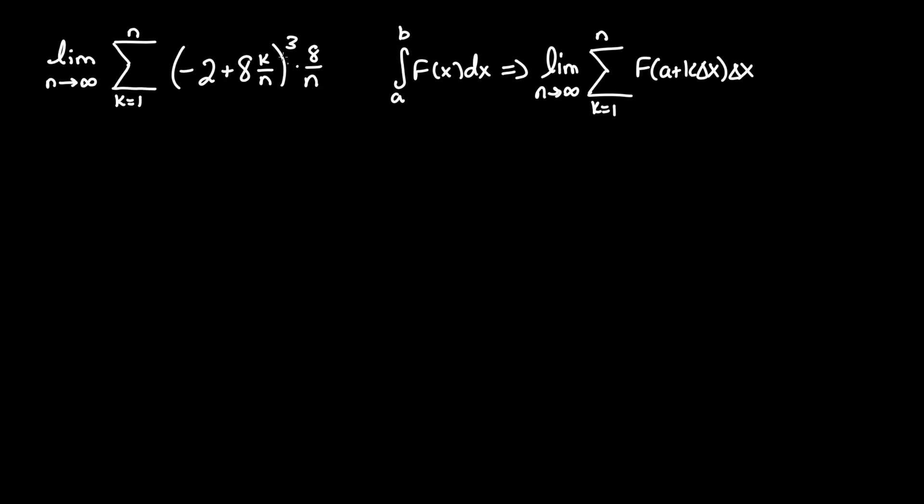and delta x is the infinitesimally small width that eventually converges into an integral. So we need to find all the values here that match with the values here. We can tell immediately that within the parentheses this should be some a plus k delta x form, while over here that's being multiplied it's delta x. So negative 2 plus 8 times k over n equals a plus k delta x. Based on the fact that we already know this is delta x, negative 2 equals a and this k will be multiplied by this 8 over n term.